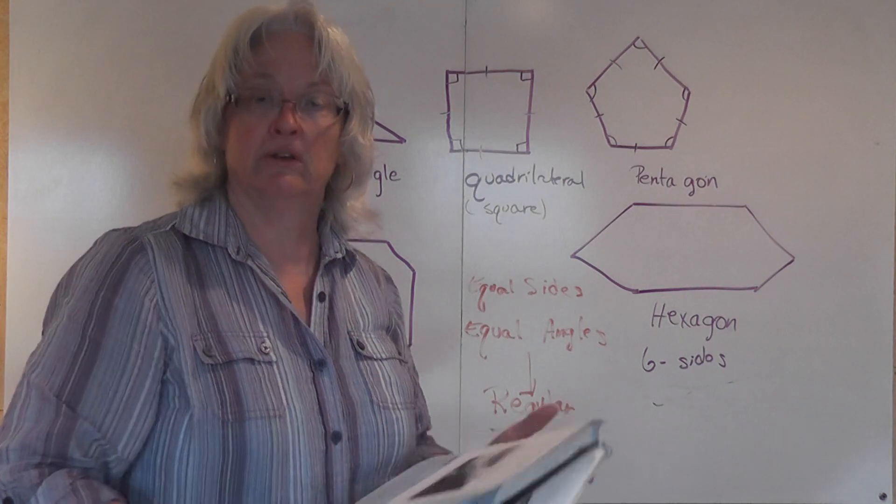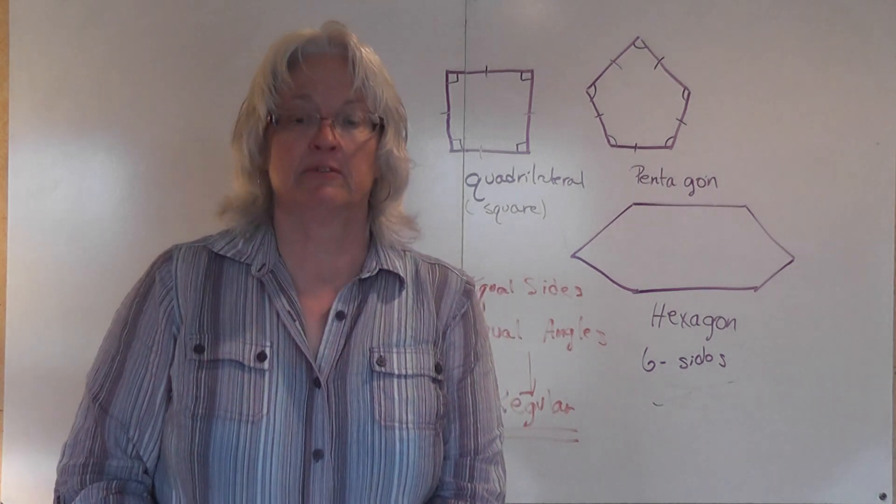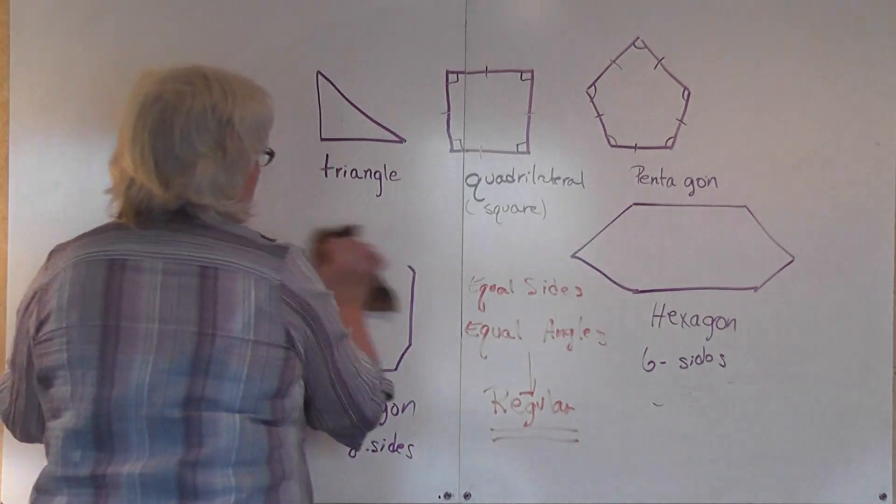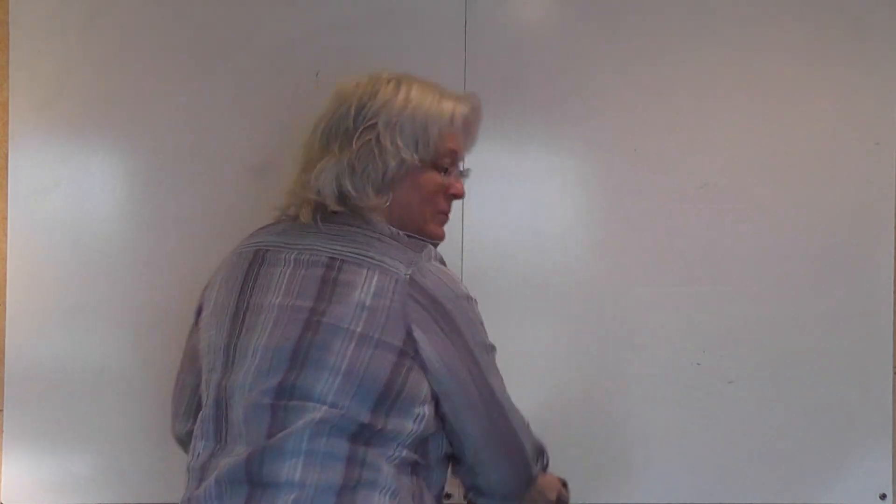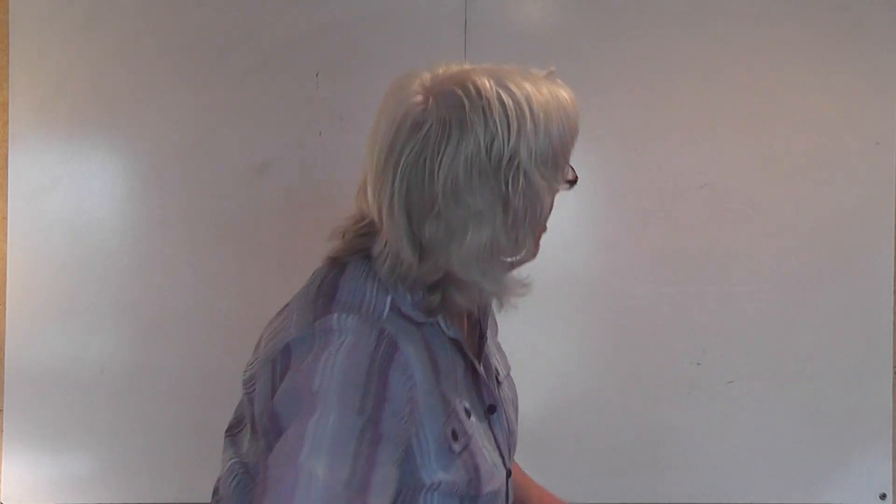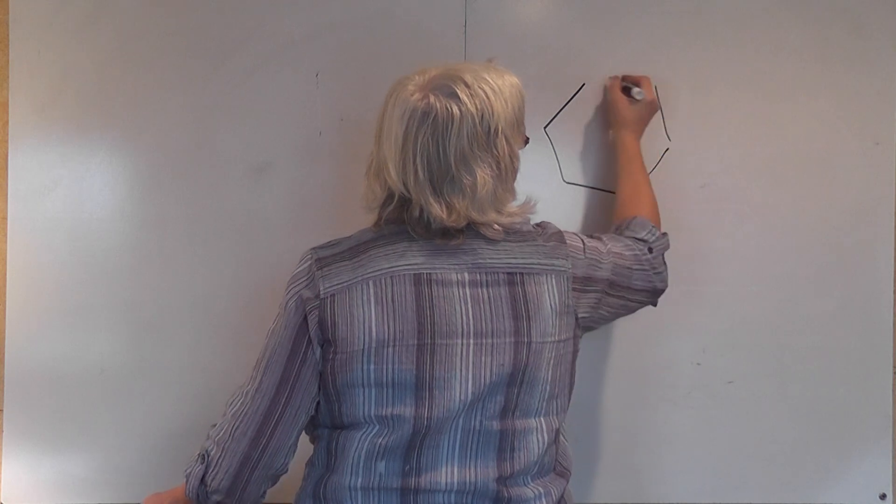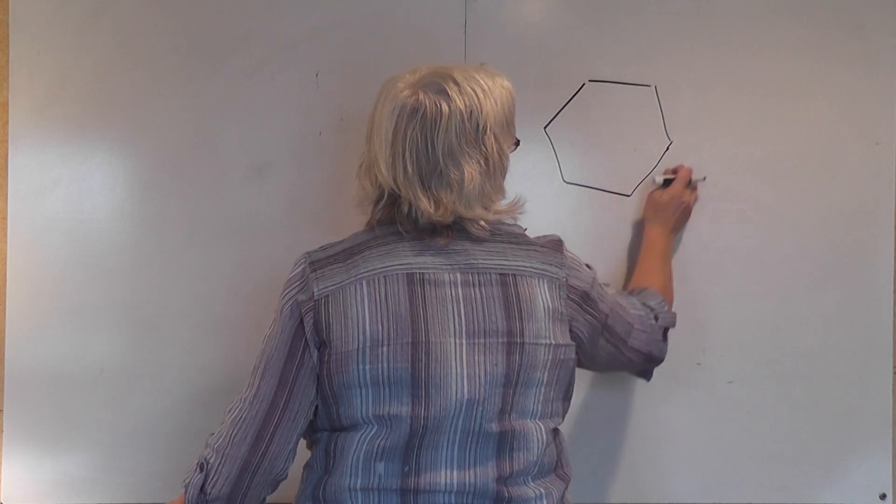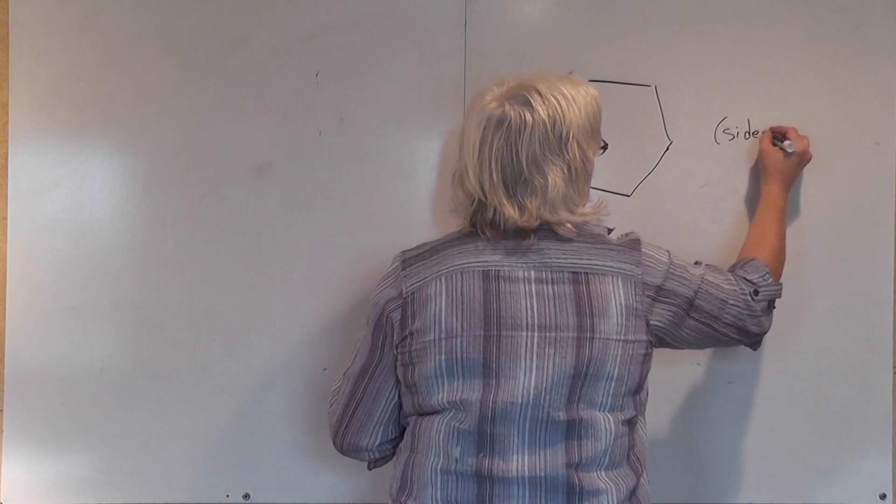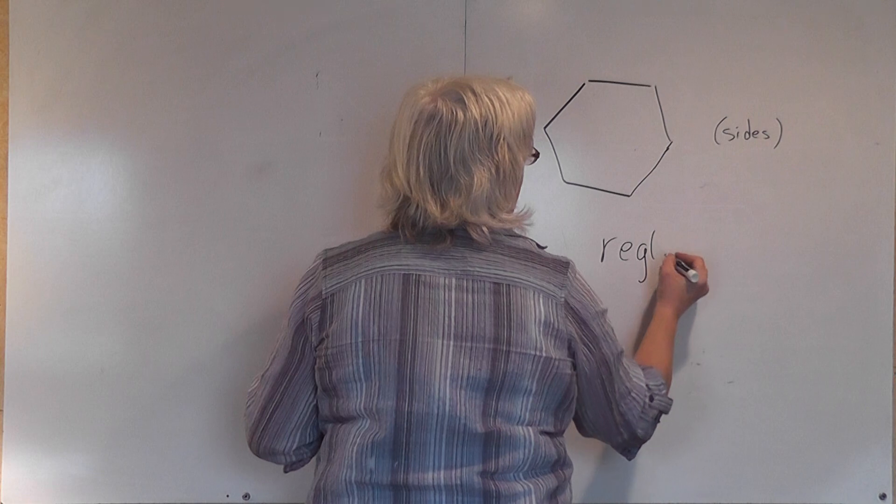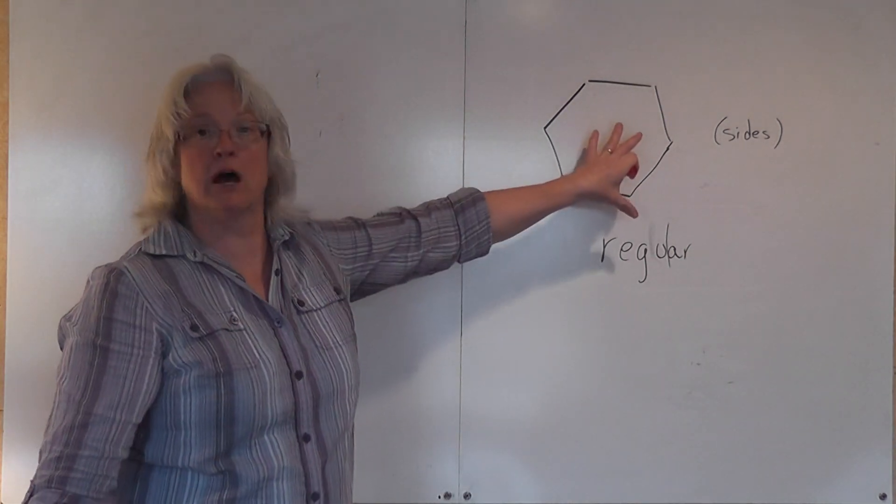If you look at example one in your book, they have a six-sided object, and they drew it so that all of those six sides are equal. We can say that it is regular because the sides are equal.